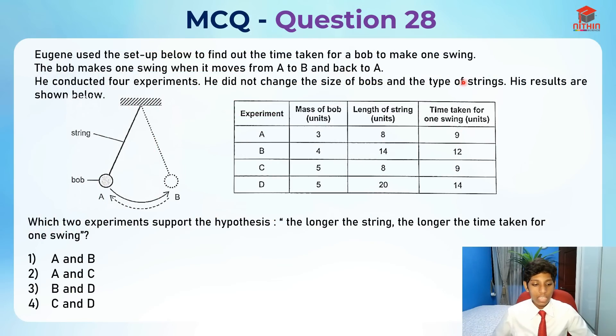This is Question 28. Let's read the question first. Eugene used the setup below to find out the time taken for a bob to make one swing. The bob makes one swing when it moves from A to B and back to A. He conducted four experiments. He did not change the size of the bobs and the type of strings. His results are shown below.